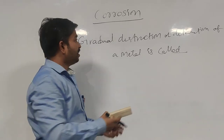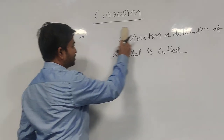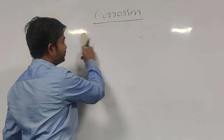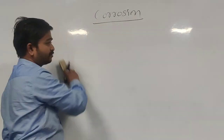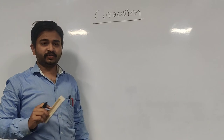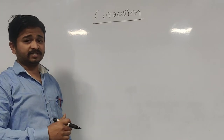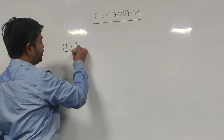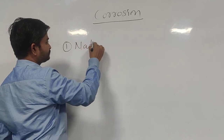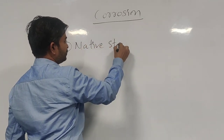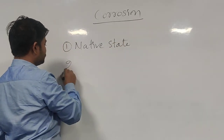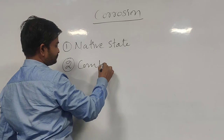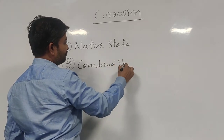How does this corrosion occur, and what are the causes of corrosion? The causes of corrosion are classified into two different types: the first one is native state, and the second one is combined state.